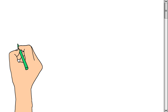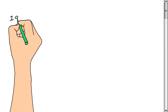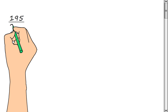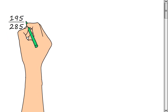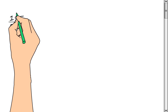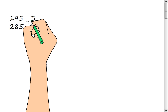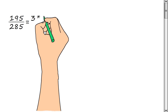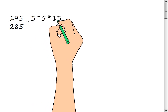We need to reduce the fraction 195/285. We represent the numerator of the fraction as a product of prime factors: 3, multiply by 5, multiply by 13.